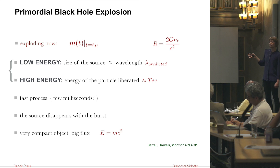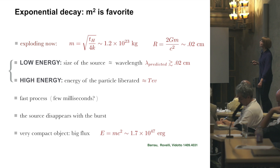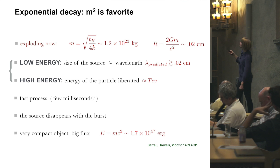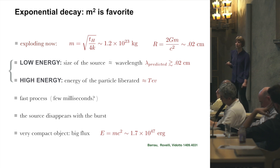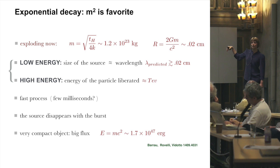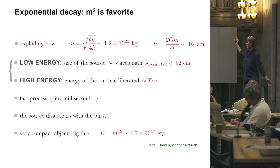This is the main framework. To put some numbers: the favorite model is the one in which the lifetime is m². The corresponding primordial black hole has a mass of 10²³ kilograms — basically the mass of Venus, a small planet. If you believe this is the right value, there should be no primordial black holes around with mass smaller than this, because they have already exploded. The fact that with the Kepler mission you don't see any primordial black holes smaller than this is compatible with this model — they have already exploded.